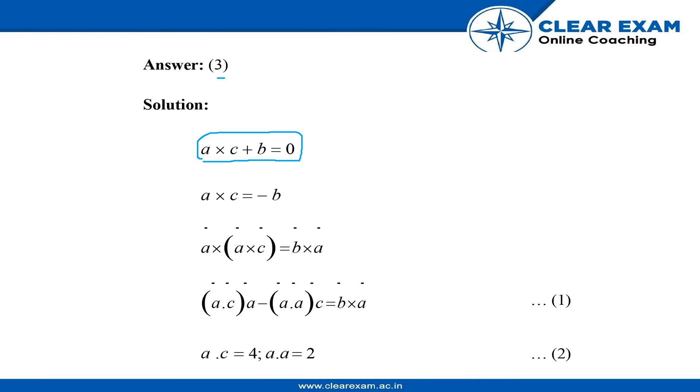To cancel the minus sign, we have changed the order. Writing this in equation form, we get a dot c times a minus a dot a times c equals b cross a.